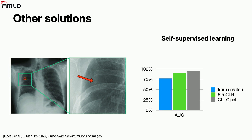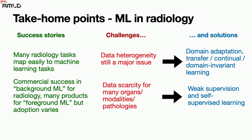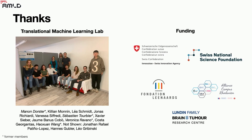To conclude: there are many radiology tasks that map naturally to machine learning tasks. There is a lot of commercial success for background ML, with adoption depending on context; foreground ML is a bit more lagging in academic radiology. Key challenges are data heterogeneity — addressed by domain adaptation or domain invariant learning — and data scarcity — addressed by weak supervision and self-supervised learning. Thank you very much, and thanks to my team for all the work.